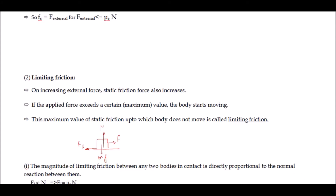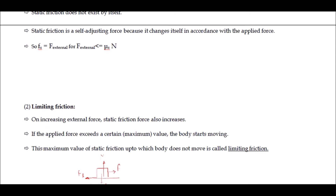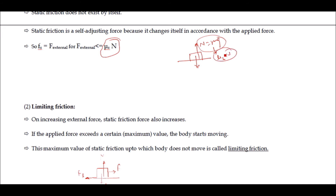Now we will see the value of static friction. Static friction fs equals the external force, for external force less than or equal to μsN. Here μsN is basically the maximum value of static friction, where μs is the coefficient of static friction and N is the normal reaction. If an object is placed on a table, as per this figure, N equals mg and the maximum value of static friction equals μs times N.